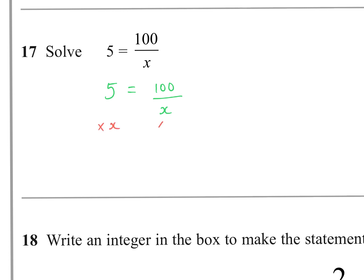Question seventeen: solve 5 = 100 ÷ x. Multiply both sides by x: 5x = 100. Divide both sides by 5: x = 20. If you're unsure about these equation types, there are plenty of videos covering equations from easier to harder ones.